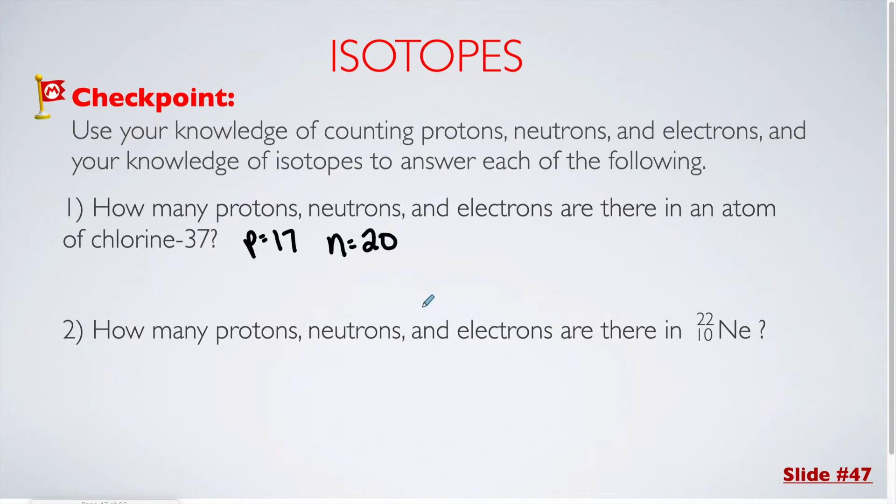It doesn't say anything here about this also being an ion. There's no evidence that there's a charge anywhere, so we can assume that this is neutral. My electrons are going to be 17, since they would match up with the protons.